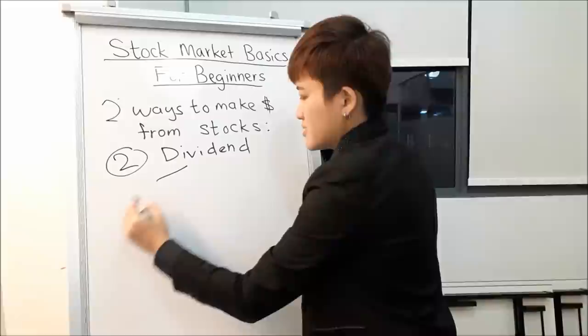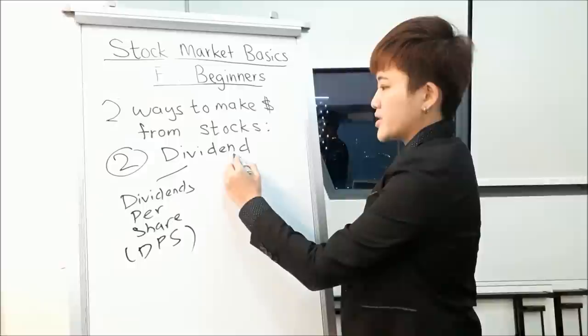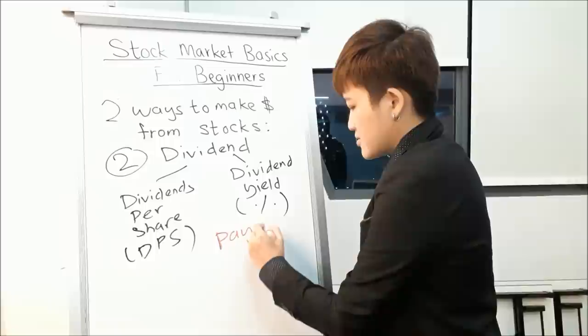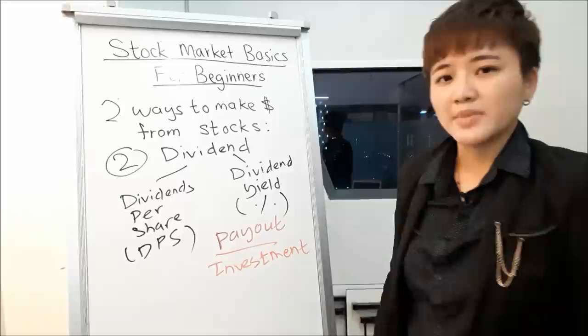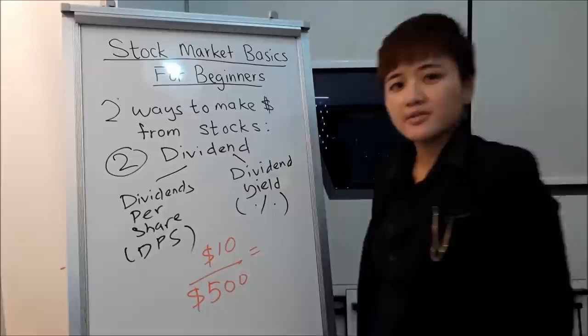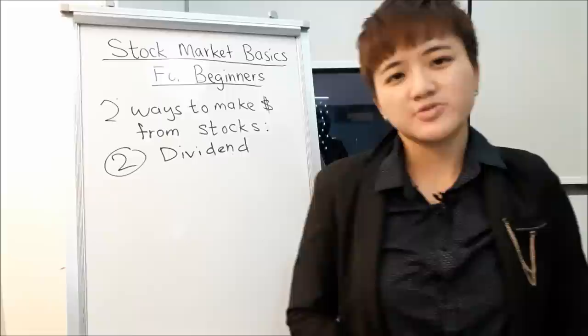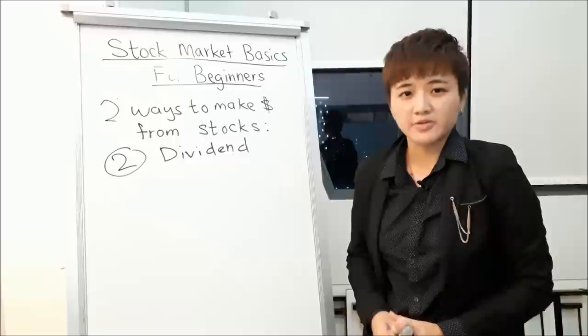The second way to make money is through dividend payments. Dividends can be measured in two main ways: dividends per share (DPS), or the more common metric — dividend yield, expressed as a percentage. Dividend yield is calculated by taking the payout amount divided by your investment amount. For example, if the payout is $10 and the stock price is $100, your dividend yield would be 10% — wait, that's actually 10%. A low yield might mean you'd be better off in bonds.